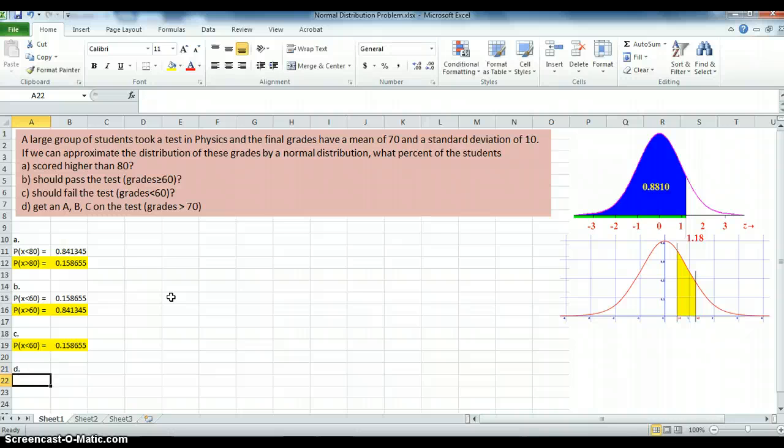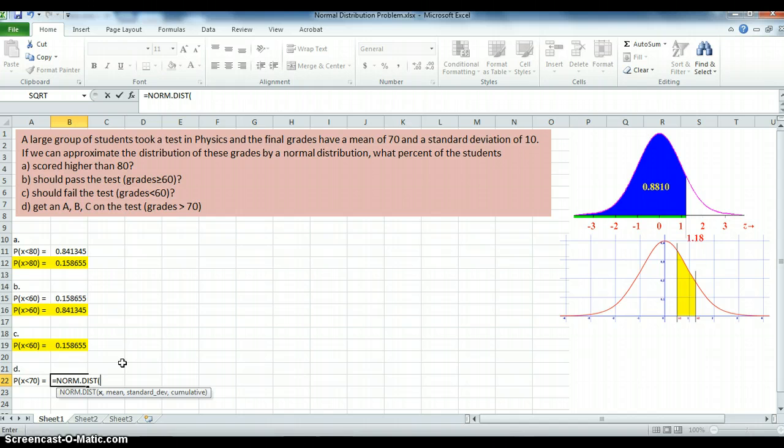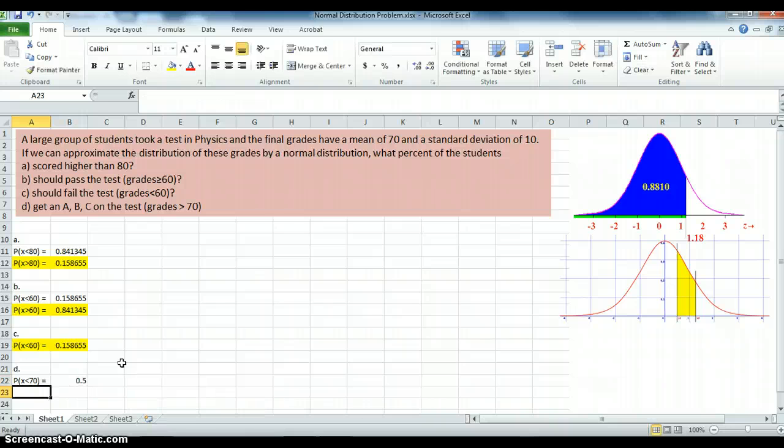So if we will just confirm that we're going to get 50%, what's the probability that, in other words, we can only do the less than 70 here. So less than 70 is going to equal, and here we say equals NORM.DIST. And here we have 70 as observation, 70 as the mean, 10 as the standard deviation, 1 again. And if we don't get 0.5, we did something wrong. We did get 0.5.